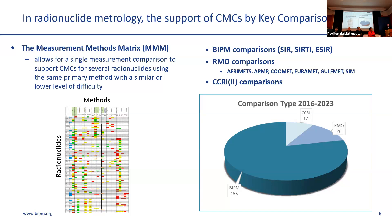Key comparisons can be piloted by three entities. First, the BIPM through centralized services: the SIR, the CRT, and the ESIR, which I will talk about in detail later. The second body is the regional metrology organizations: AFRIMET, IPMP, COMET, RAMET, GERFMET, and SIM. And finally, the consultative committee for ionizing radiation section 2, which can also organize comparisons for the strategic radionuclides.